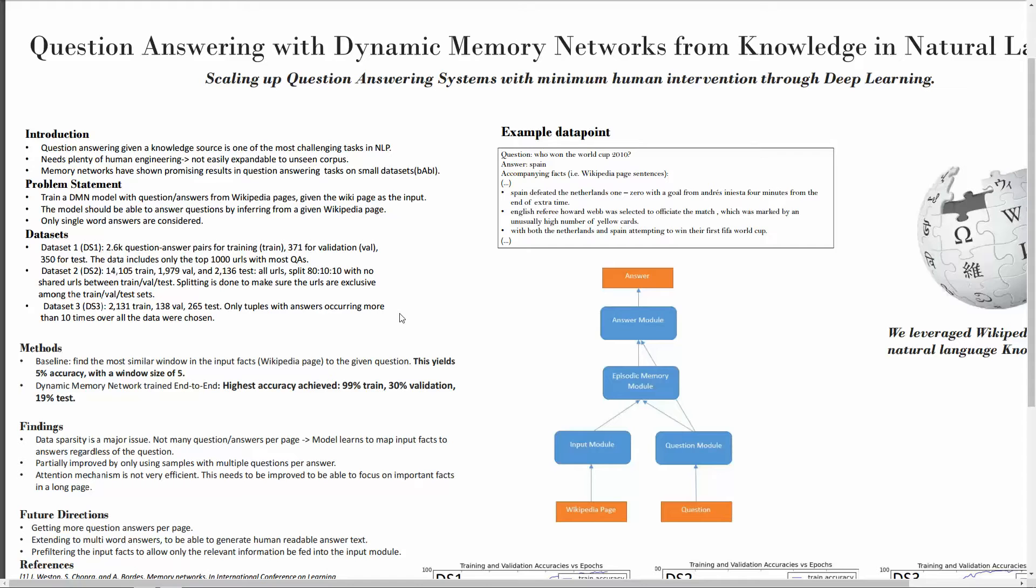In terms of the baseline, our baseline is based on a very naive baseline which basically finds the most similar window of input facts to the question. Similarity is defined as the sum of the inverse document frequency of the common words in the question and the window in the input fact, and the highest scoring window is chosen. If the answer exists there, we say that the method has found the answer. We saw that it could achieve 5% accuracy.